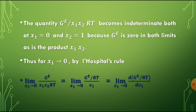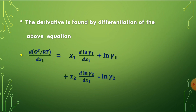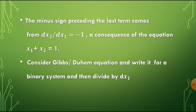The derivative is found by differentiating the equation G_E by RT = x1 ln gamma1 + x2 ln gamma2. So d(G_E/RT) by dx1 equals x1 d(ln gamma1)/dx1 plus ln gamma1 plus x2 d(ln gamma2)/dx1 minus ln gamma2. The minus sign preceding the last term comes from dx2 by dx1 equal to minus 1.